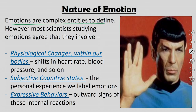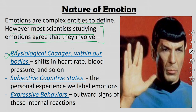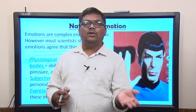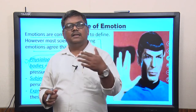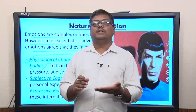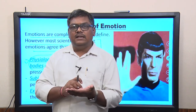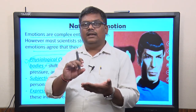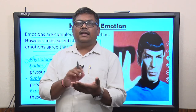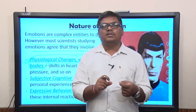Most scientists studying emotions agree that they involve three processes. First, emotion leads to physiological changes within our bodies. Whenever you are emotional — whether happy, sad, or any other emotion — the first thing you feel is a little bit of arousal. Whether positive or negative, you feel aroused, and this arousal is different from the common homeostatic baseline. When feeling emotion, your body feels a little bit more heightened than the calm state, and that is called physiological arousal.